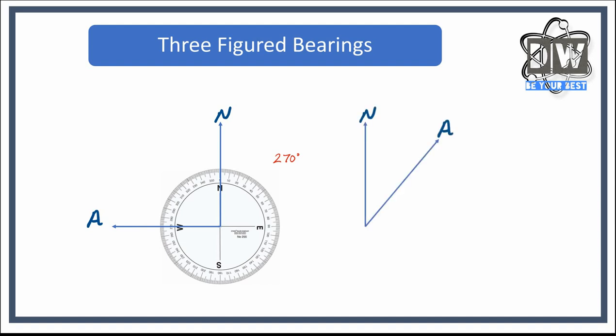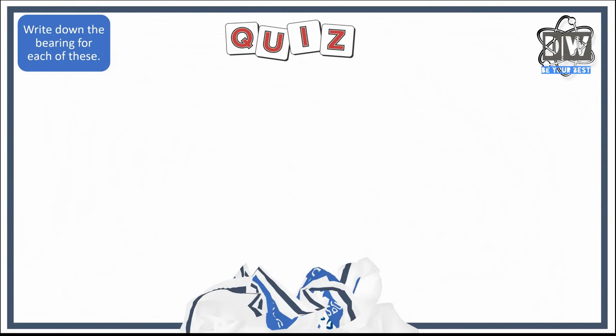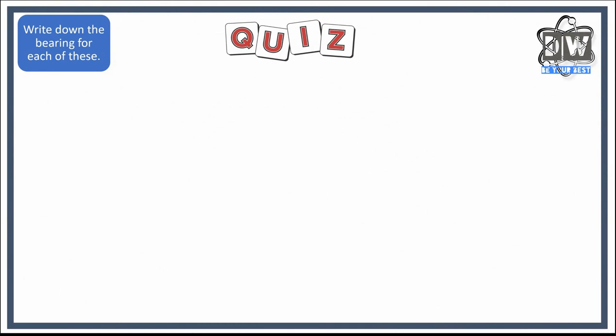Let's do this one now. I'm not going to tell you what it is; I'd like you to tell me what the three-figured bearing would be. Hopefully you've worked that out. Remember, it's three figures, so it's not going to be 40 because that would be two figures—it's going to be 040 degrees. That would be the answer for that one, and it really is that simple. We are already at the quiz.